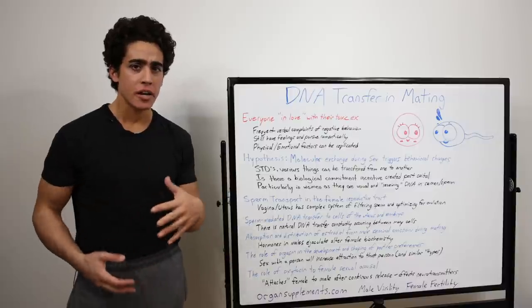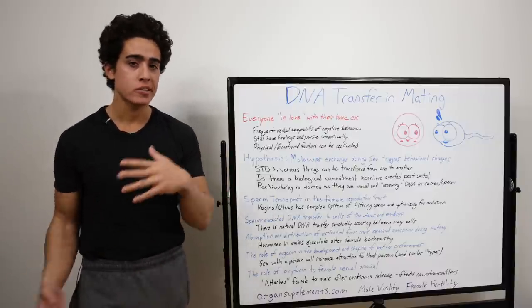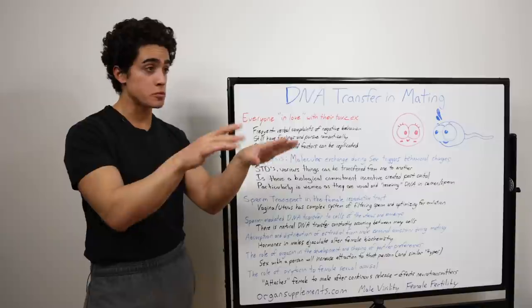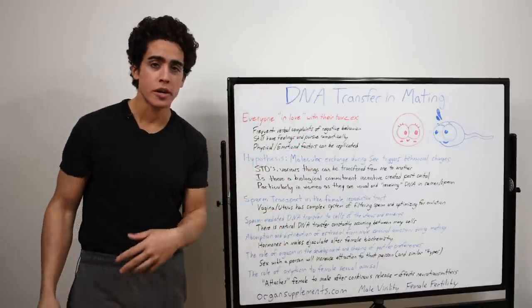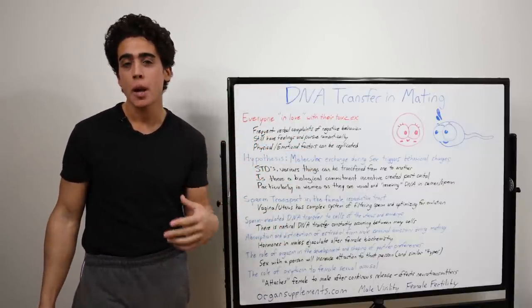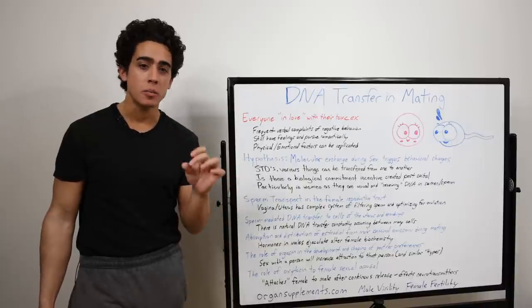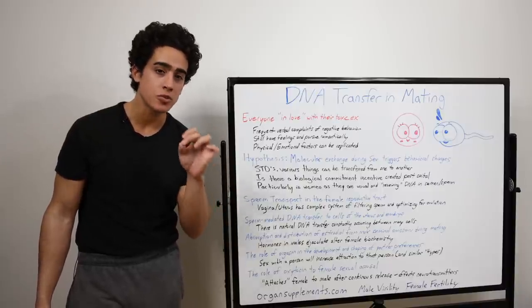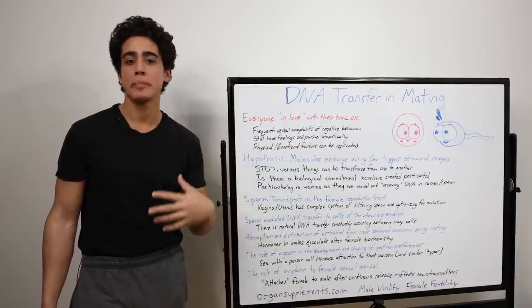And most people are under the assumption that reproduction is some ridiculous race of the fittest sperm to the egg. Oh, who can swim faster? And that the woman has to be like peak fertility and ovulation. But in reality, the female's reproductive system is filtering out the sperm and storing the best ones.